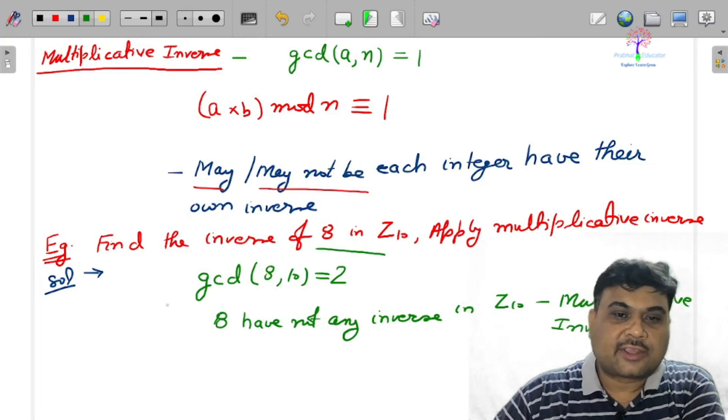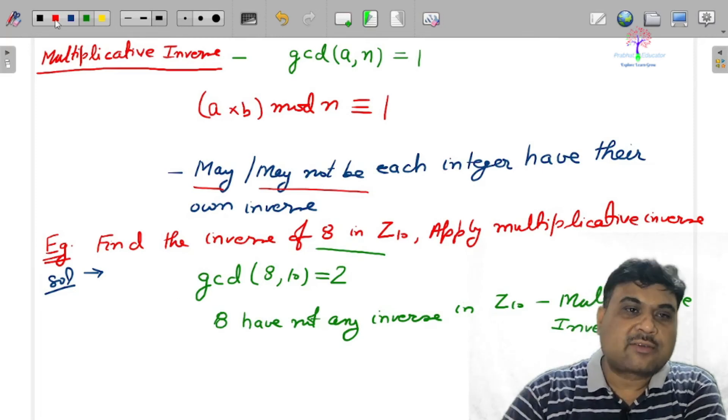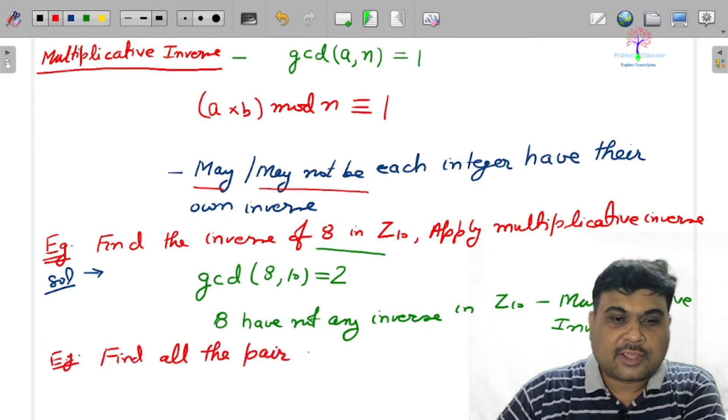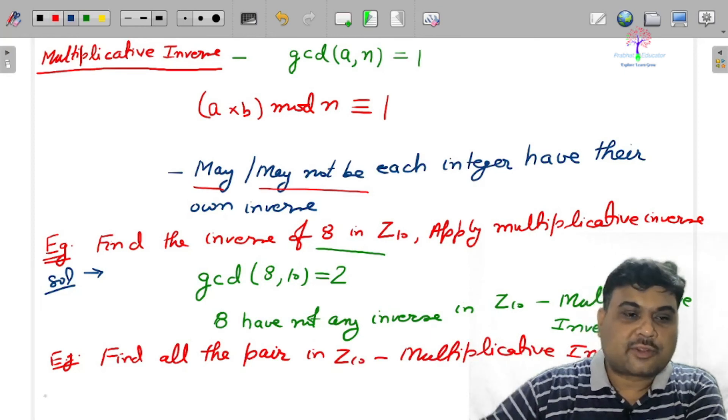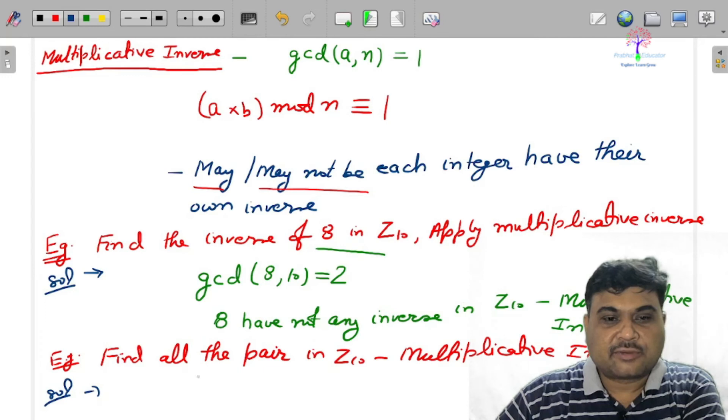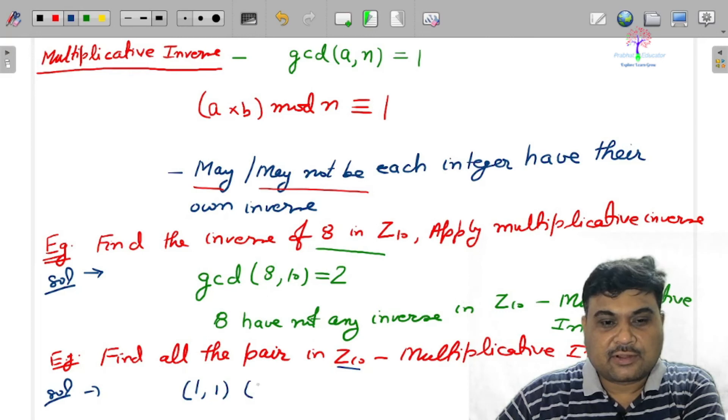That is the first thing - it may or may not be condition. Now next example: find all the pairs in Z10 and apply the multiplicative inverse. 0 multiplied by 0, you will not get the 1. 1 multiplied by 1 mod 10, you get the 1. 3 multiplied by 7, 21. Then last one, 9 multiply by 9, then you get the 1. So there are only 3 pairs if you are using the multiplicative inverse.